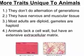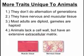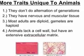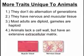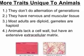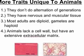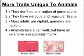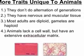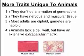Animals. Listen to the cannibal, he likes bio more. You like his flow, he ain't gonna stop, so here he goes. Animals are also unique for several reasons: they don't do alternation of generation; they got nervous and muscular tissue. Most adults are diploid, gametes are haploid. Also animals lack a cell wall, but they have extensive extracellular matrix.